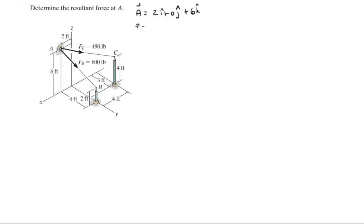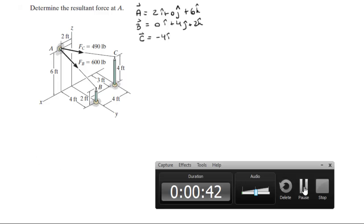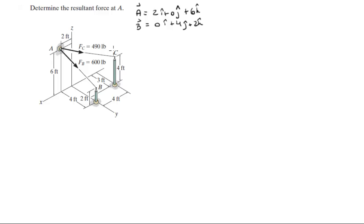The position of B which sits at 0i plus 4j plus 2k. The position of C which sits at negative 4i plus 3j plus 4k.